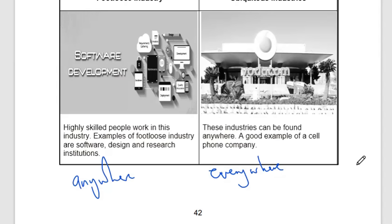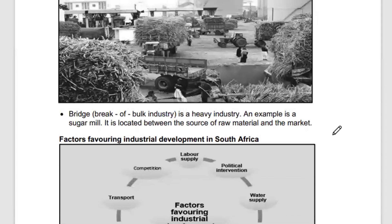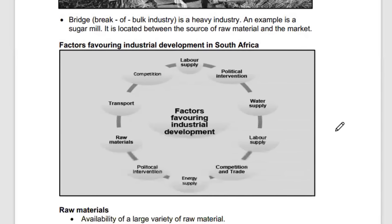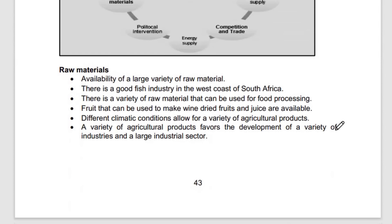Break-of-bulk (or bridge) industries are located between the source of raw material and the market — bridging the gap between raw material source and the final market. Factors favouring industrial development include abundant raw materials, favourable climatic conditions, labour supply, water, energy, transport, and political intervention.